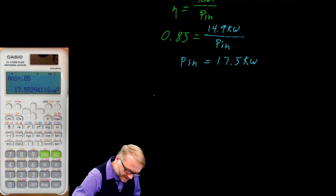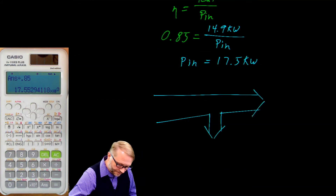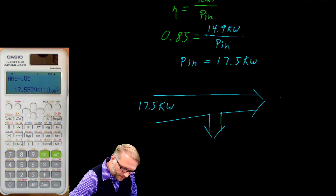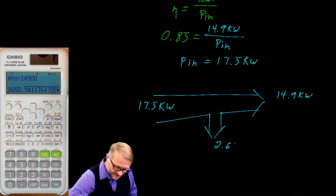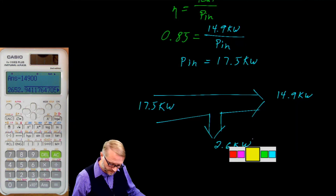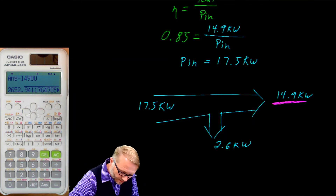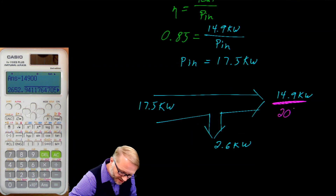By now you've noticed that I do indeed like these power flow diagrams. So this is what our motor looks like. Our power in is here at 17.5 kW. Our power out is here at 14.9 kW, which means we lost 2.6 kW along the way. There's a classic problem here where people get these flip-flopped. Remember, this is the output power, and that 14.9 kW is the same as 20 horsepower.